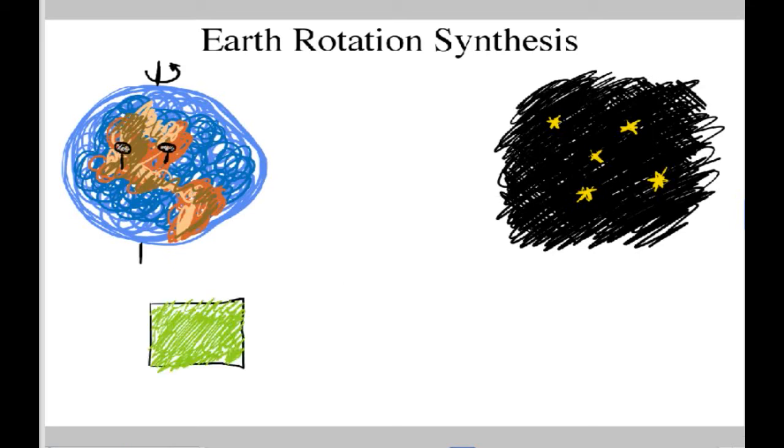So imagine we have a field out in a meadow somewhere, and we have a few antennas in that field. Now we know from previous lectures that those antennas sample the Fourier transform of the sky called the UV plane. And for these two antennas on the top, they will sample something in, say, the strictly U direction, if I've defined this direction to be north.